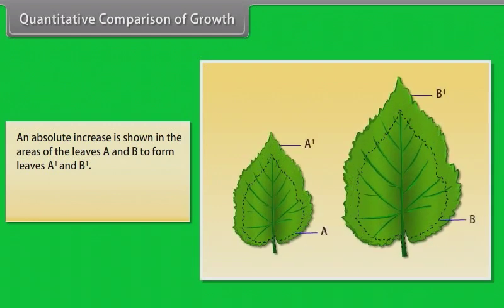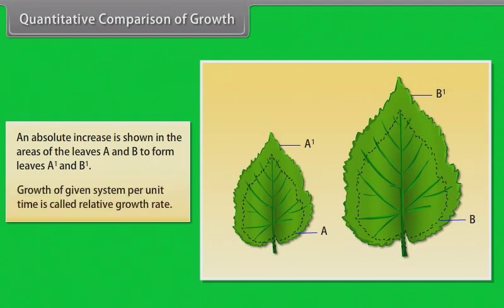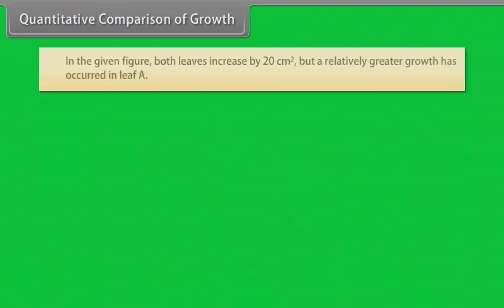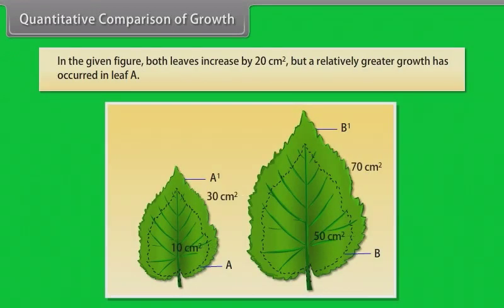An absolute increase is shown in the areas of the leaves A and B to form leaves A1 and B1. Growth of given system per unit time is called relative growth rate. In the given figure, both leaves increase by 20 cm², but a relatively greater growth has occurred in leaf A.